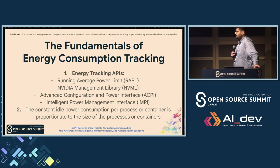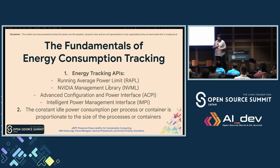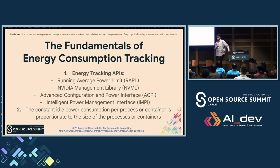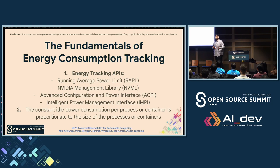CPU cycles, cache misses, etc., are all captured as metrics and made available via Prometheus if you're using a utility that can consume metrics from eBPF. The last point discusses idle power consumption, which is proportionate to the power consumed by containers or pods. Idle power consumption is constant regardless of whether any processes are running. Dynamic power consumption, on the other hand, depends on resource utilization. Both idle and dynamic power consumption together give you the right set of metrics for observability from an energy consumption perspective.